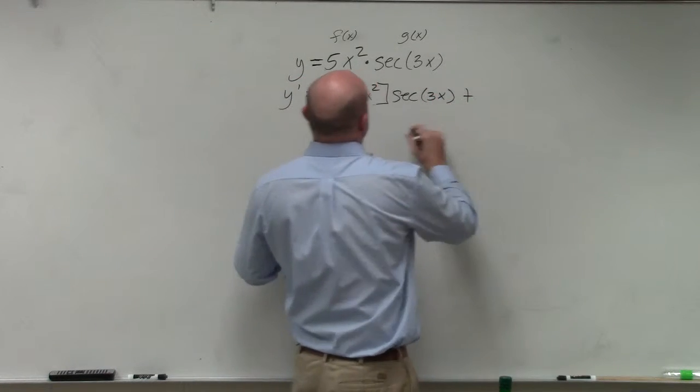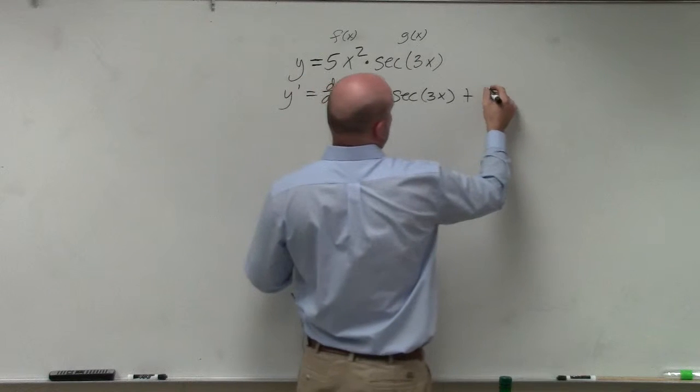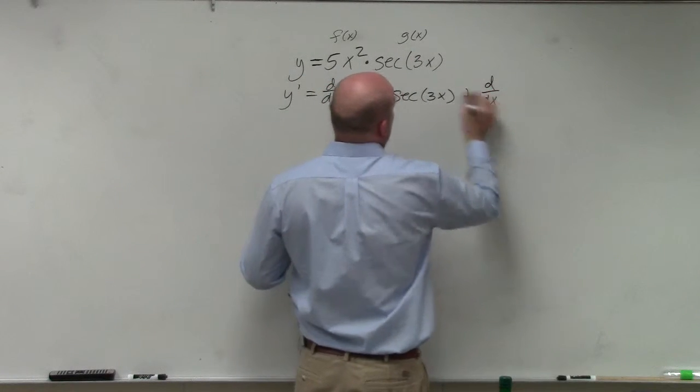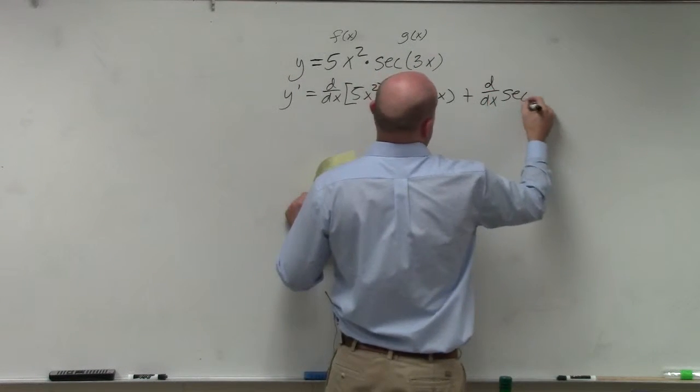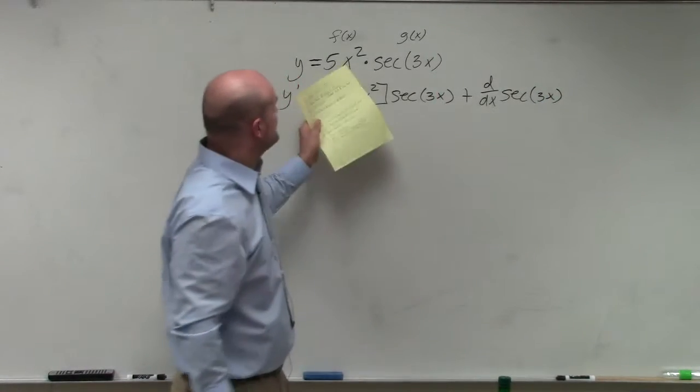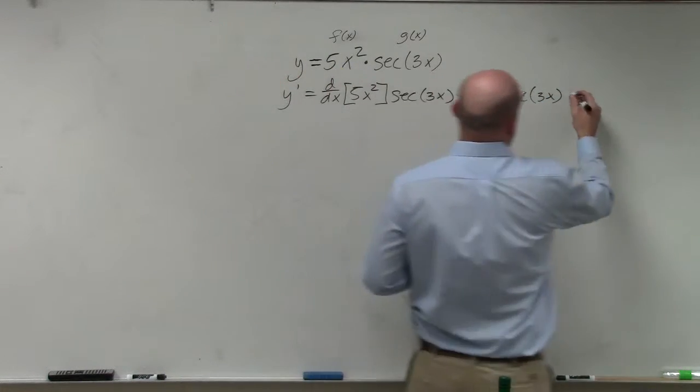And then we're going to add that to the d over dx of our g of x, which is secant of 3x. And then that's going to be times our f of x, which is 5x squared.